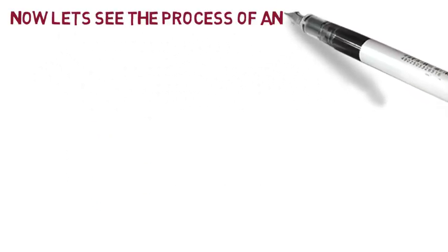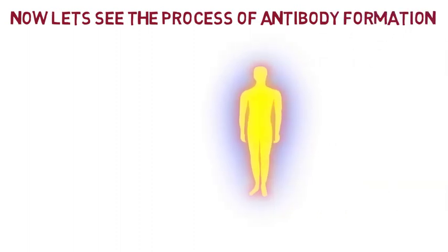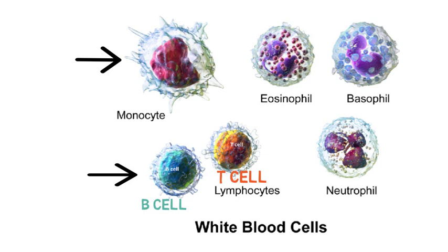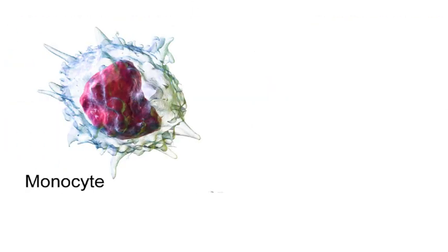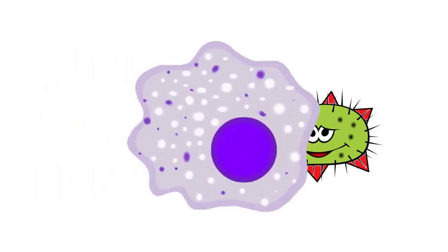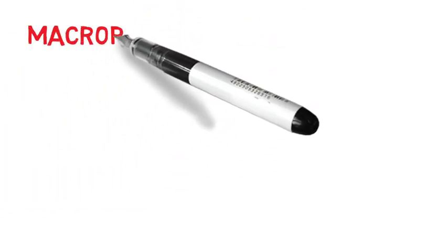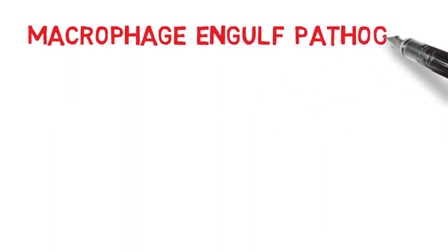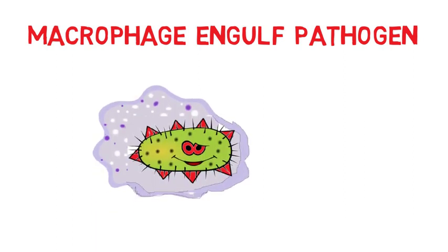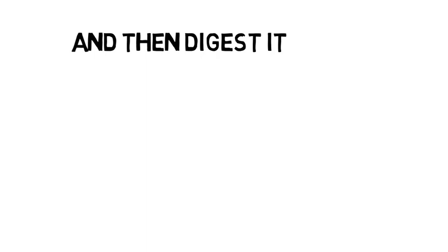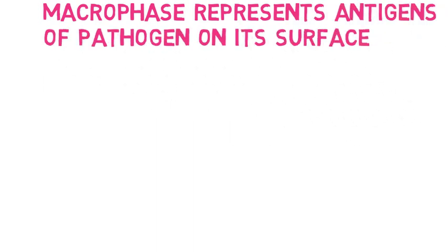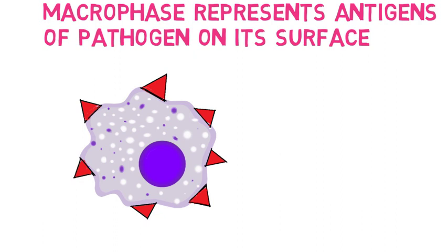Now let's see the process of antibody formation. When any pathogen attacks the human body, Monocytes — a type of WBC — form a cell called Macrophage. This macrophage engulfs the pathogen and then digests it. After digesting the pathogen, the macrophage presents antigens of the pathogen on its surface, and now it becomes an antigen-presenting cell.